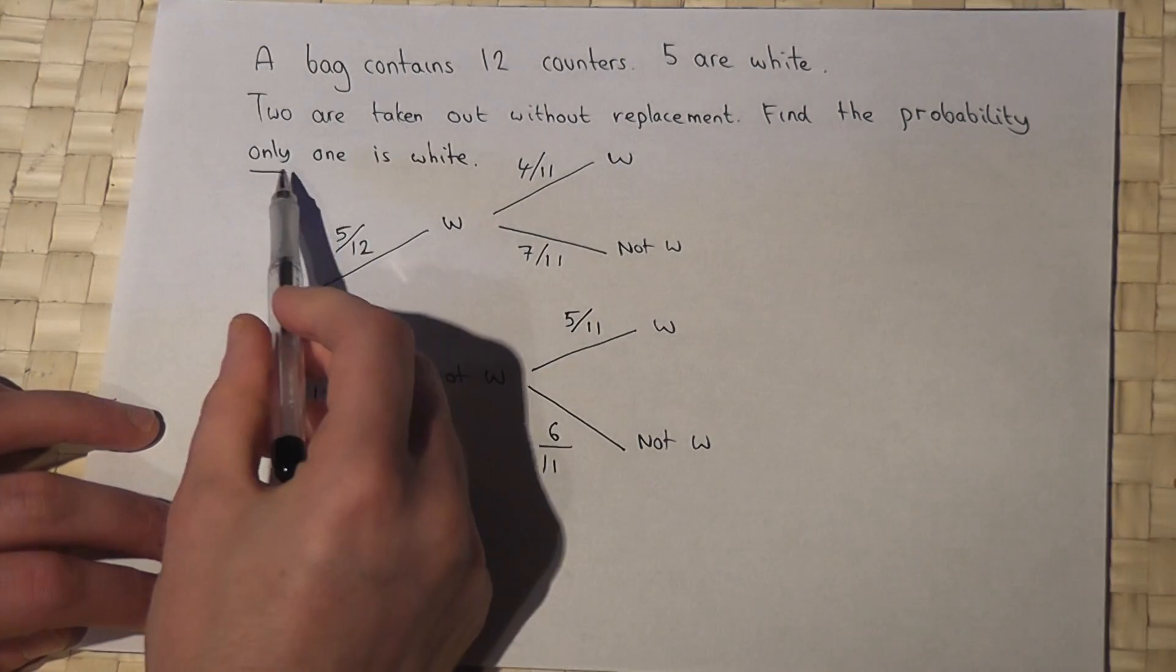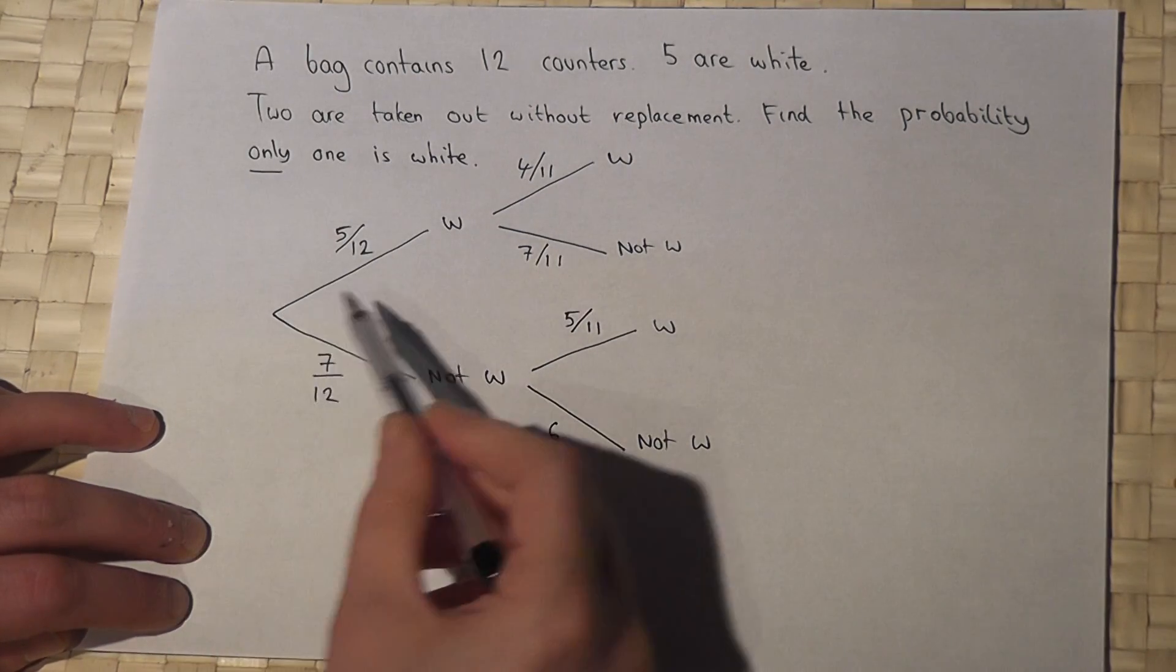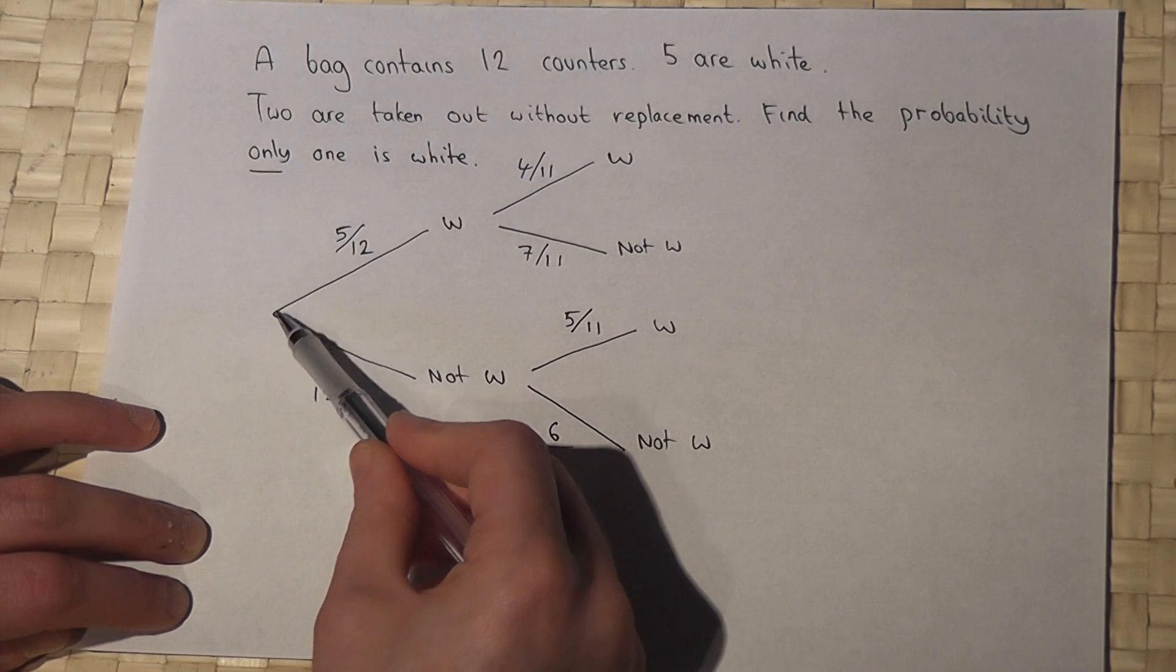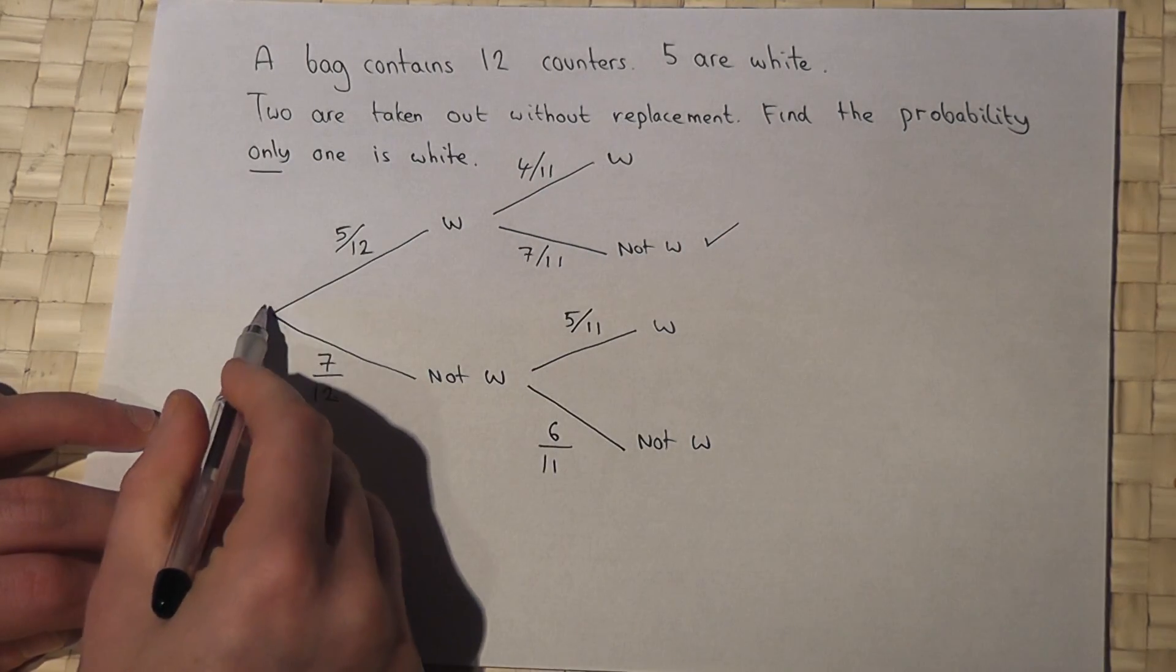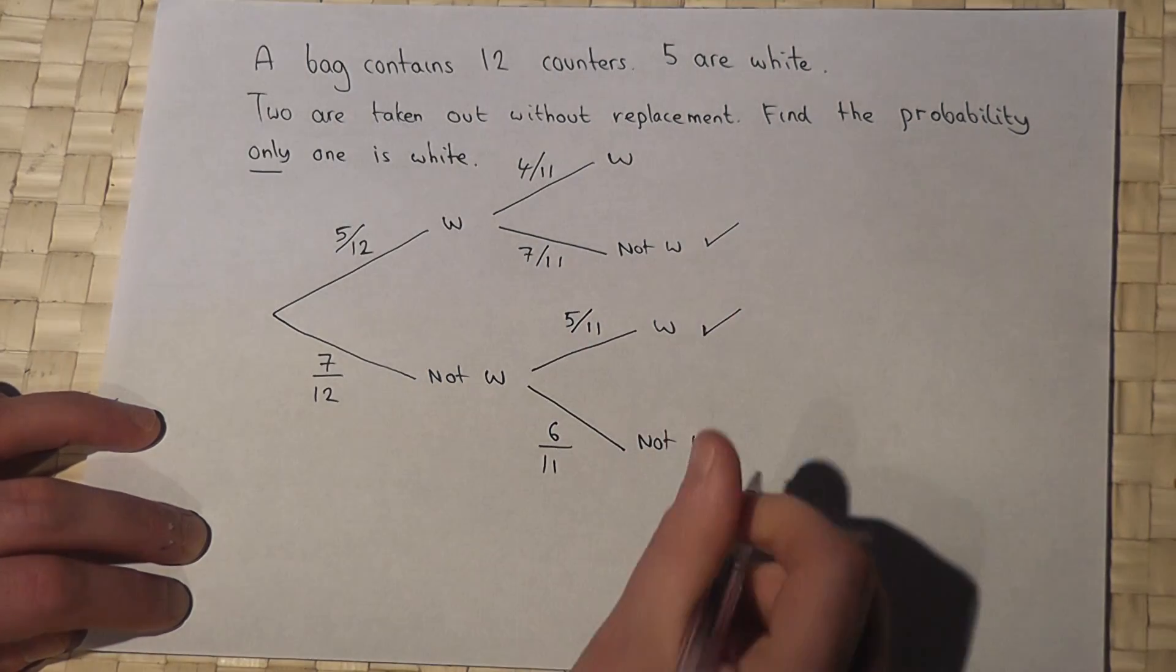We want the chance that only one of these two counters is white. Looking at the tree diagram, it's either this option—white, not white—or this option—not white, white.